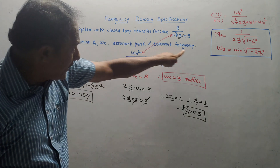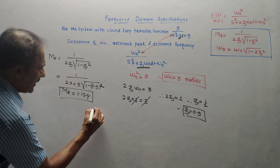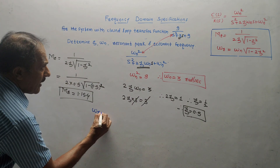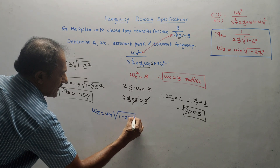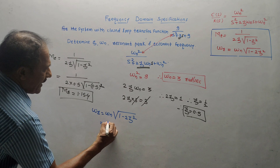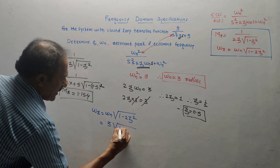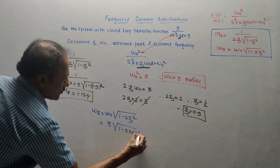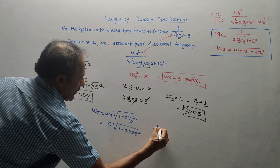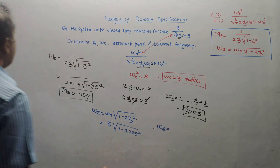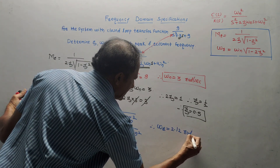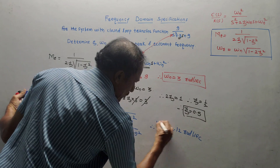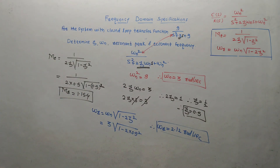Next, calculate the resonant frequency. We have the formula: ωr = ωn√(1 − 2ζ²). Put the values: ωn is 3, so it is 3 × √(1 − 2 × 0.5²). Therefore the value of ωr, the resonant frequency, is 2.12 radians per second. These numericals are pretty simple — you just have to make use of these two important formulae.